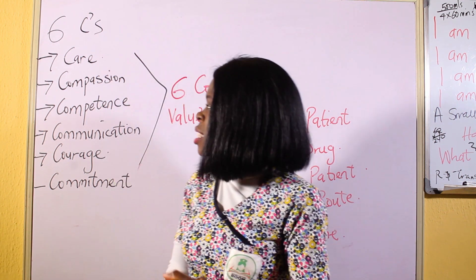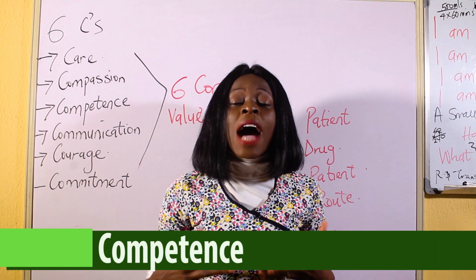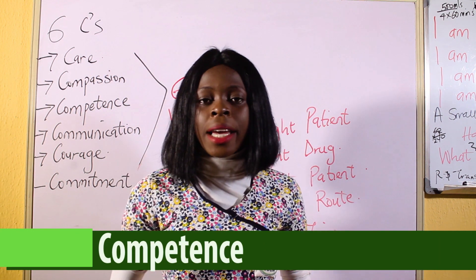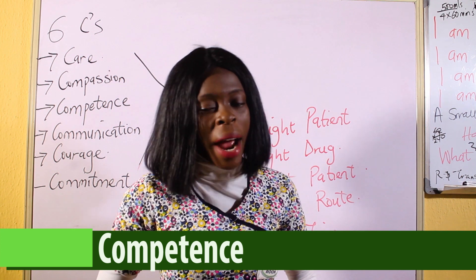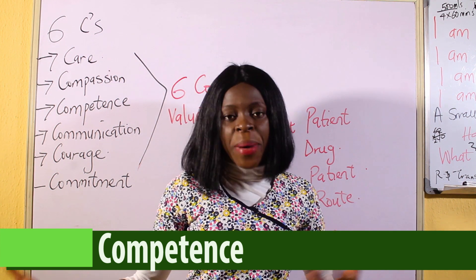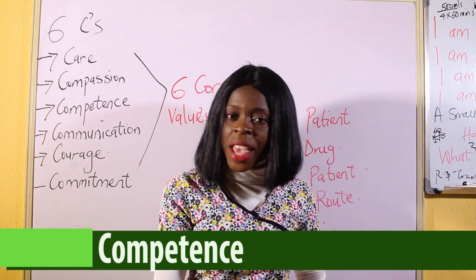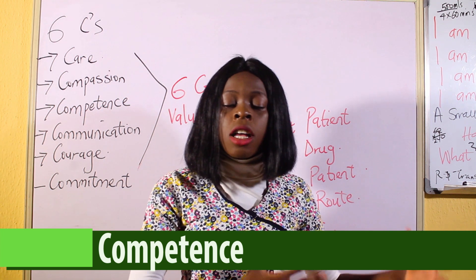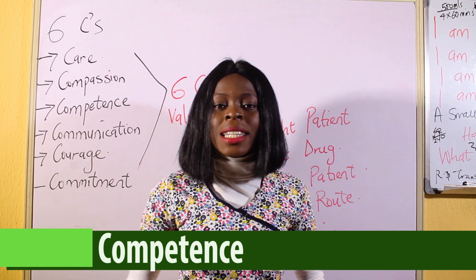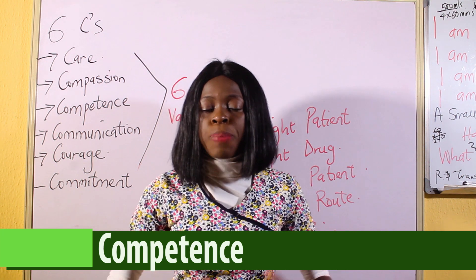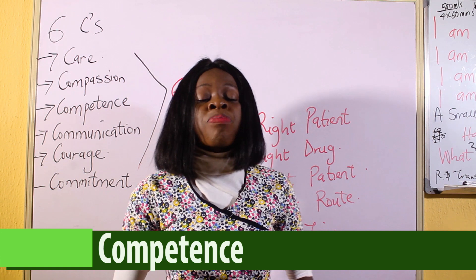The third C is competence. For you to be called a nurse, you have to be competent. First of all, you have to go through school. For those that are BSc nurses, you have to go through at least five years in the university — at least five years, because sometimes most students spend six years or more. Then also for those that are doing your diploma, your RGN nurses, you have to spend at least three years to have your license as a registered nurse.